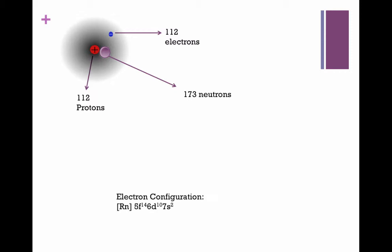The electronic configuration of Copernicium is RN 5F14 6D10 7S2.